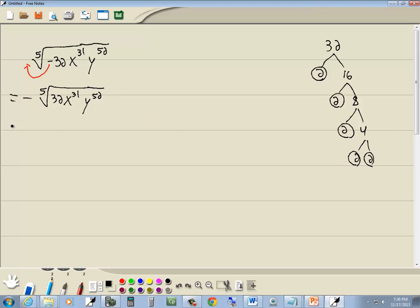We have them all circled, so there's five 2s. So we have the negative fifth root of five 2s, x to the 31st, y to the 52nd.